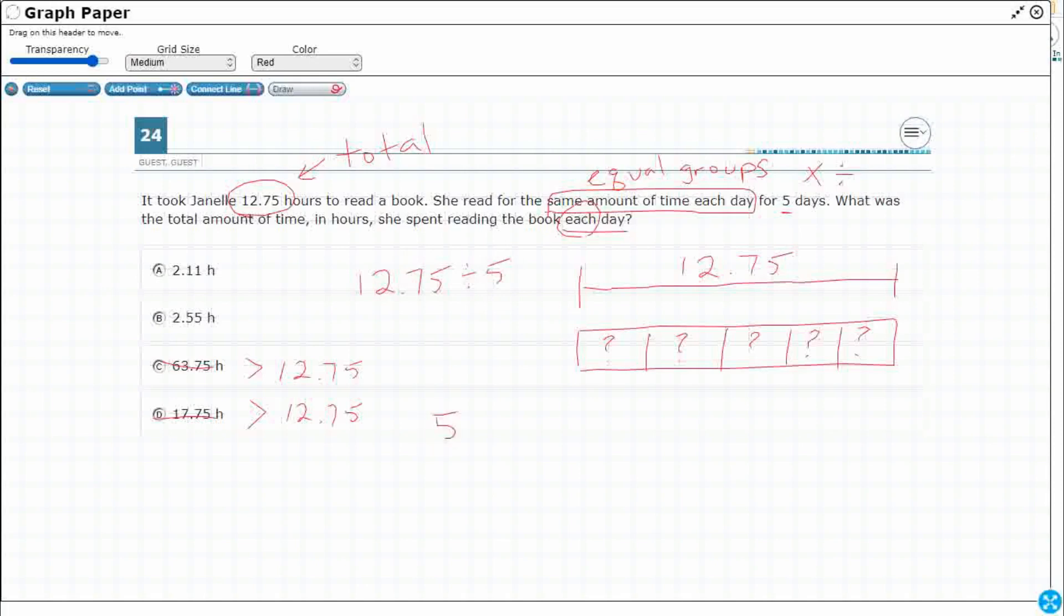So five will be our divisor. We're going to divide it into 12.75. That's our dividend. The only trick, if you want to call it a trick with dividing decimals, is we basically ignore the decimal in the dividend. We just bring it up here onto our division bar and then we just pretend like it doesn't exist.